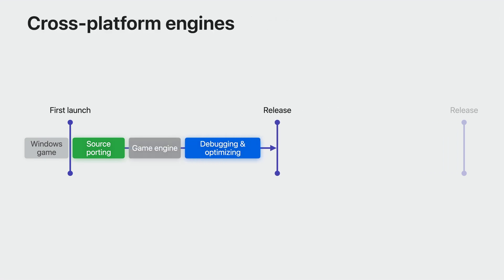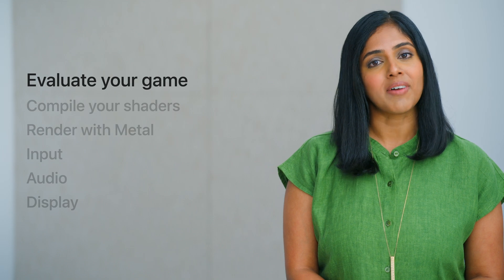Seeing your game running right away can even help you when you use a cross-platform engine to take care of most of your porting. You can see your game's potential ahead of porting any platform-specific code or plugins that your Windows game added over the cross-platform engine. Porting your game to the Mac starts with evaluating your game, followed by compiling your shaders, rendering with Metal, converting your game's use of input, audio, and display and HDR rendering.